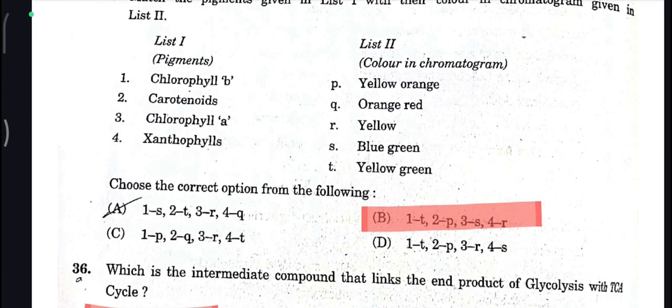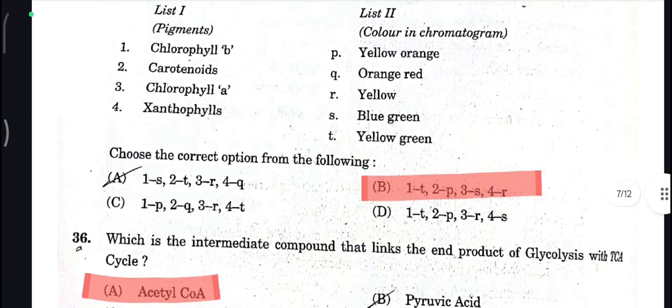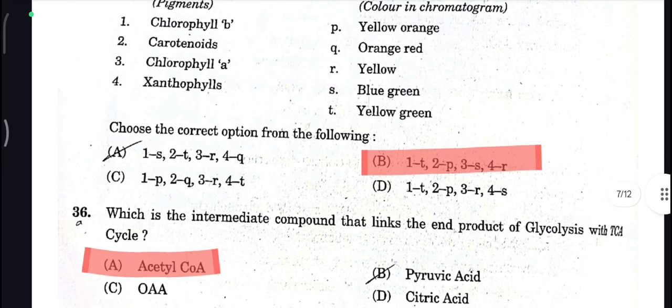Chlorophyll A, Chlorophyll B — they are like colors, you can easily guess here. So 1 is T, 2 is AP, 3 is 4, and 4 is R. So B is your correct answer here.